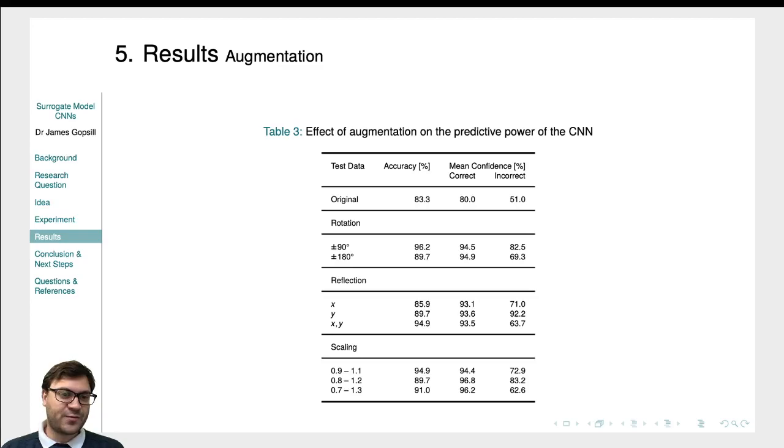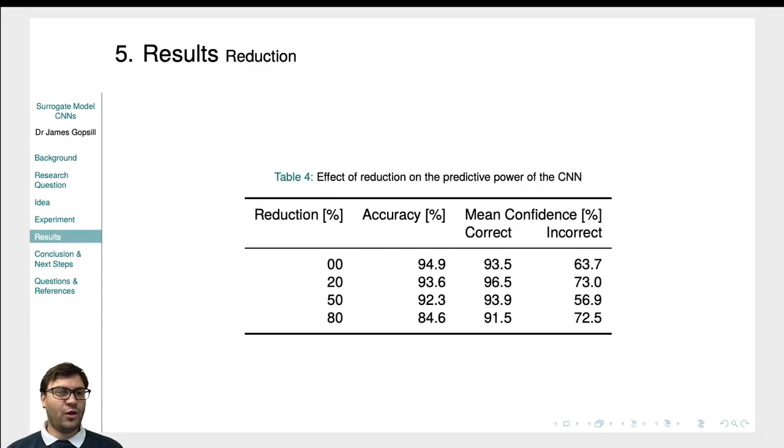We looked at the effect of augmentation on the predictive power of the CNN. So this is a way of using low computationally expensive procedures such as rotating, reflecting and scaling of the renders to enhance our dataset that the CNN is trained on with the aim of increasing its accuracy. And we did manage to see that in our use case, so we can see that actually we could probably get away with using less renders, be less computationally expensive but still achieve the same predictive power.